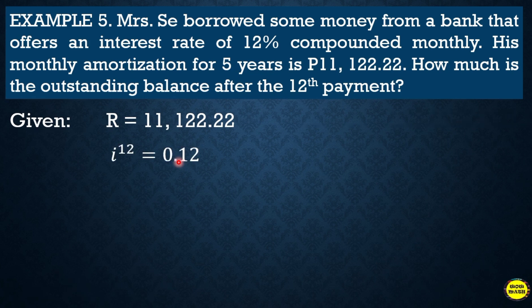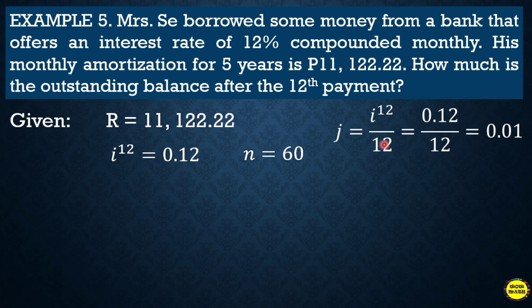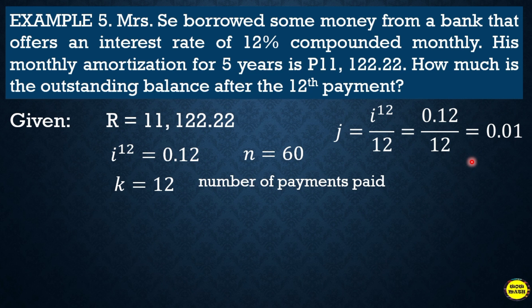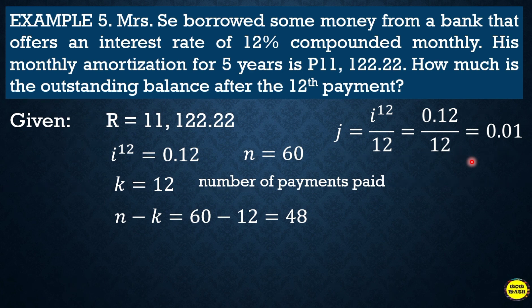The given values: the regular payment is eleven thousand one hundred twenty-two point twenty-two, the nominal rate is 0.12 (12 percent), the total number of payments n is 60, the rate per period j = 0.12 ÷ 12 = 0.01, k = 12 payments already made, and n − k = 48 months remaining to be paid.